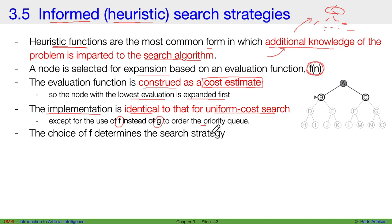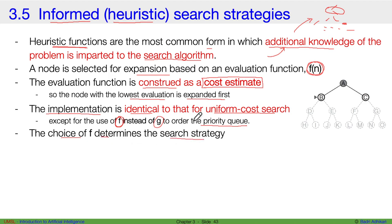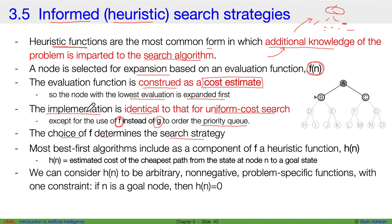It is still a priority queue, but the values in the priority queue differ. In uniform cost search we had the lowest path cost, whereas here we have a cost estimate f. This choice of f determines the search strategy within informed search algorithms.